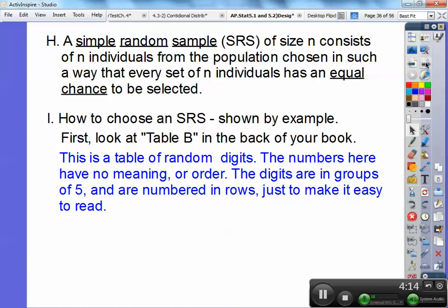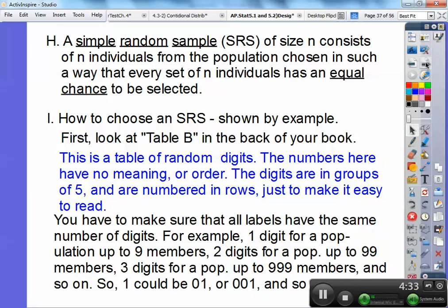And this table is a table of just random digits. You don't have to write this down. I'm just telling you this. The numbers here have no meaning. There's no order. The digits are in groups of five and numbered in rows just to make it easy to read. They could be just all crammed together, but it would be too hard to read it that way. So, they're just random digits on there.